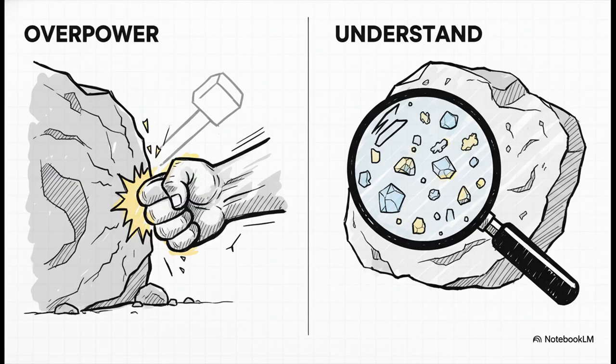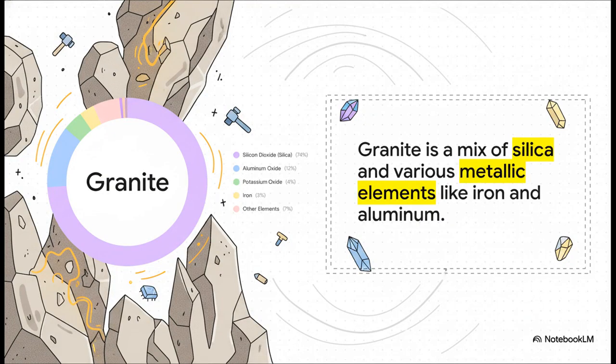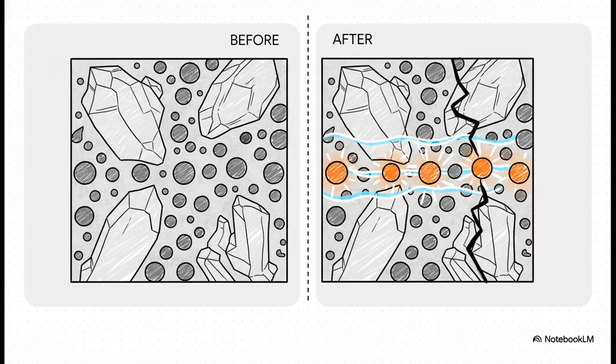The very thing that makes rock so tough is also its Achilles heel. Let's look at granite, one of the hardest rocks we have to deal with. It's not one solid thing, it's actually a mix. Most of it is silica, quartz. But, and this is the crucial part, it's also speckled with all these little metallic bits like iron and other metals. And this is where we find the weakness.